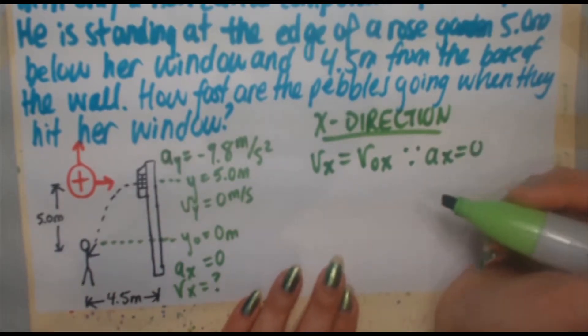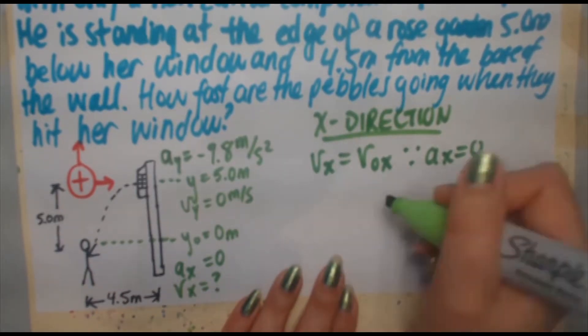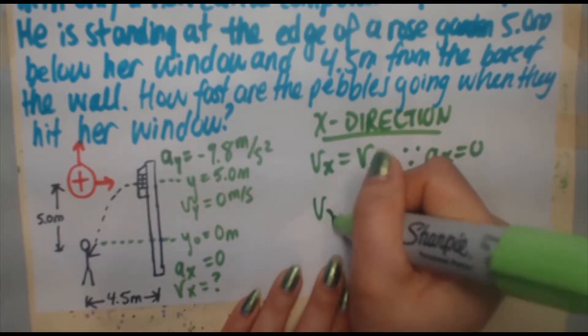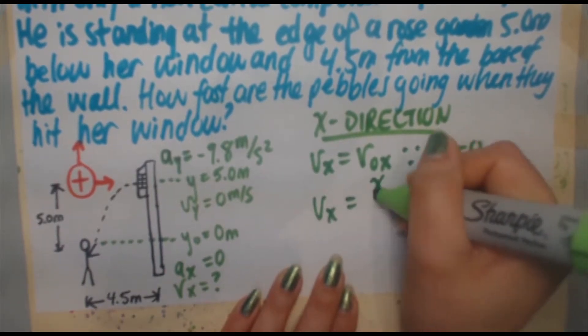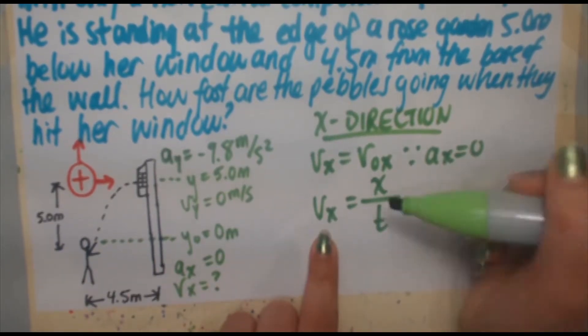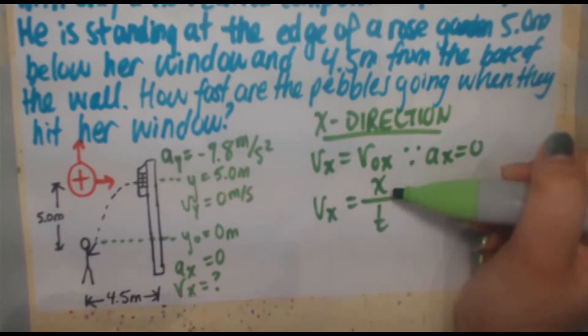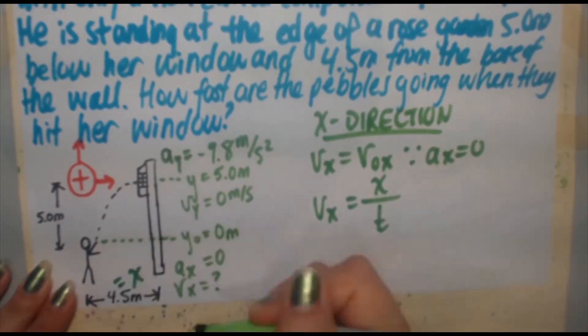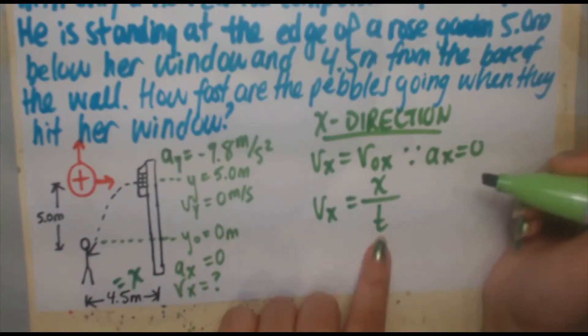Because ax equals 0 in the x direction, we can say that speed is equal to distance over time. Distance in the x direction, we're going to quote as x. Time is time. Here's what we're looking for. We know x, that's back here in this picture. x is equal to 4.5 meters. So all we need is t.